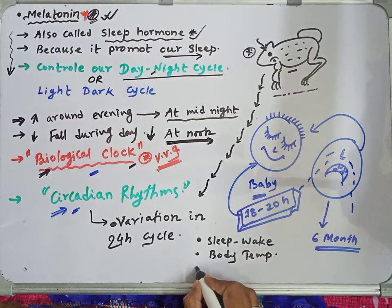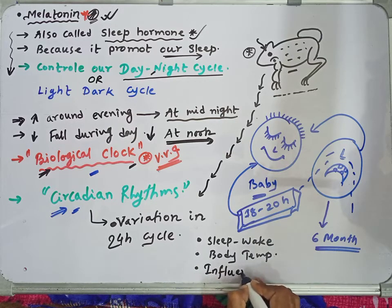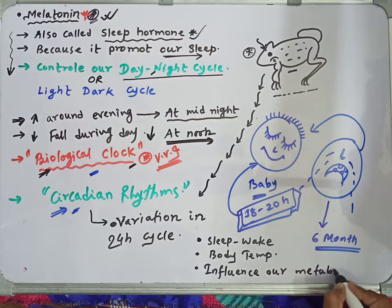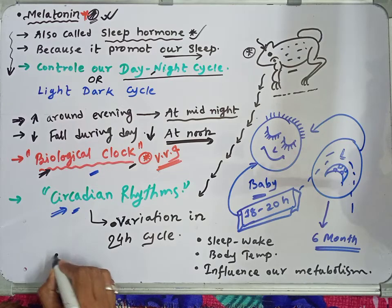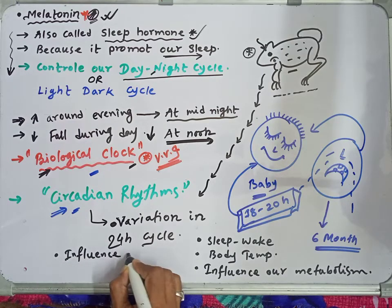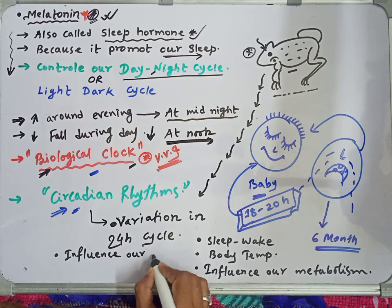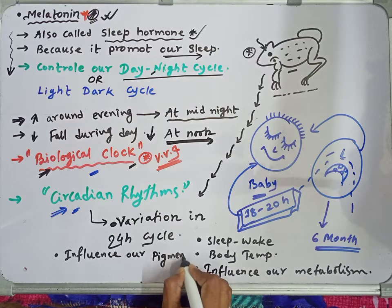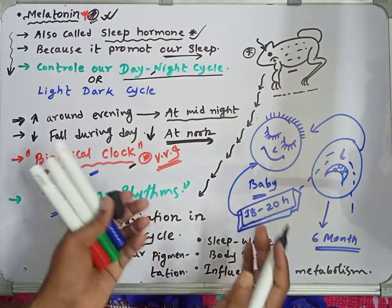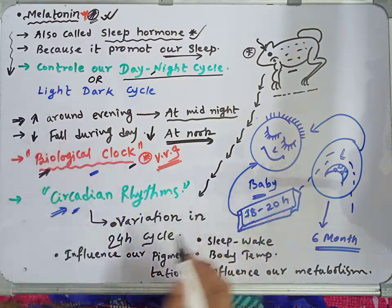In addition to controlling body temperature, melatonin from the pineal gland also influences our metabolism. Furthermore, it influences our pigmentation — body coloration — determining how light or dark someone's skin tone will be.